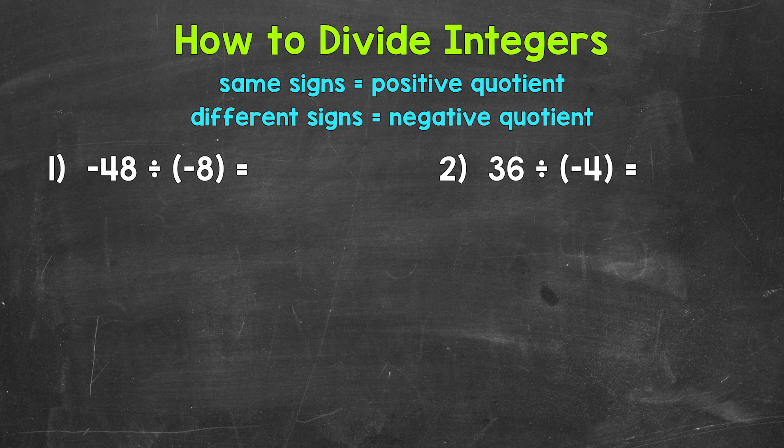Let's jump into number 1 where we have negative 48 divided by negative 8. For now, let's just think of this as 48 divided by 8 and what that quotient will be. Remember, the quotient is the answer to a division problem. So 48 divided by 8 is 6. So let's write a 6 here.